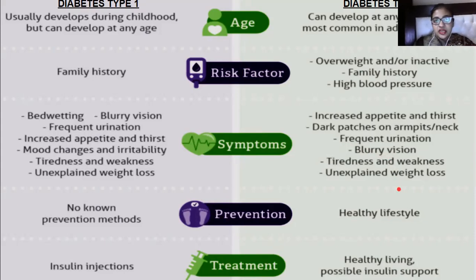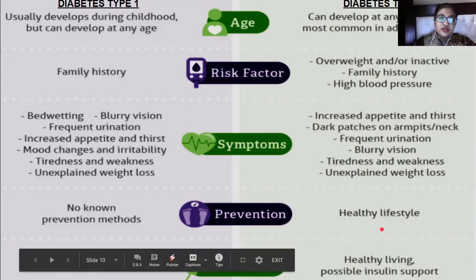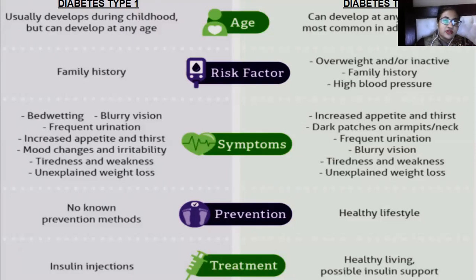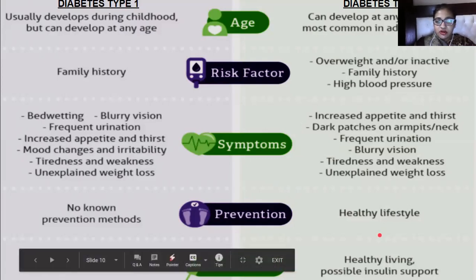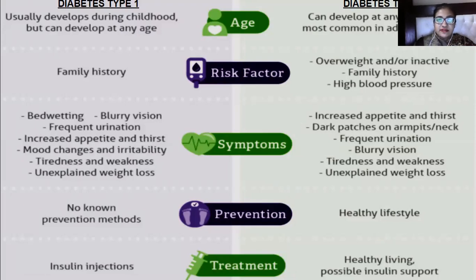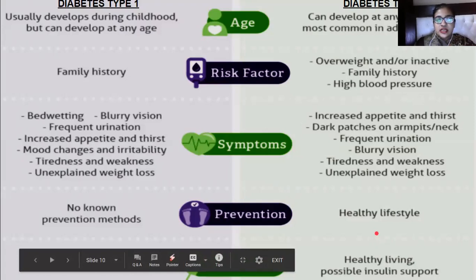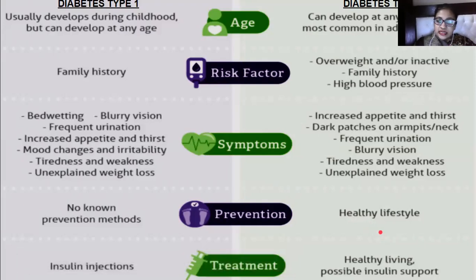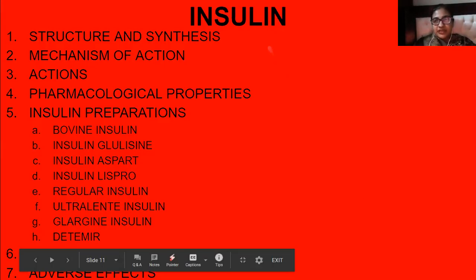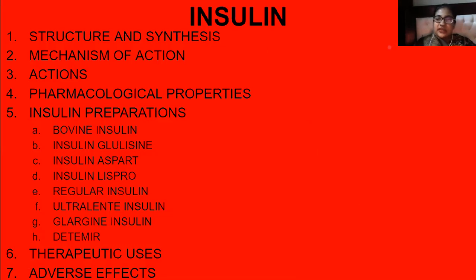Prevention of type 2 diabetes involves a healthy lifestyle — especially important during lockdown situations where physical activity has decreased. Treatment includes healthy living, possible insulin support, and oral hypoglycemic agents, which we will study next. First, we'll cover insulin for type 1 diabetes.